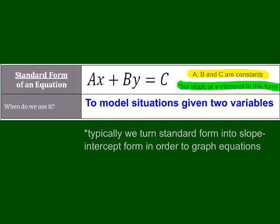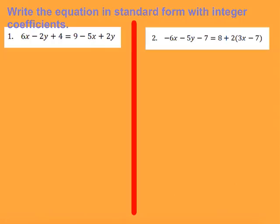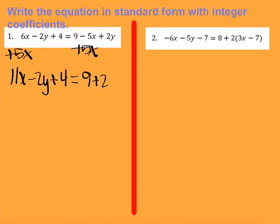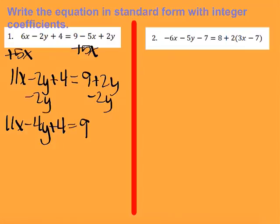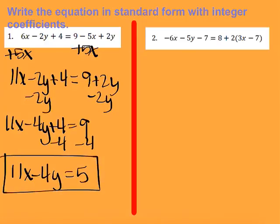When we need to graph it, we turn it into slope-intercept form. So let's take a look at an example of putting it into standard form. I need to get my X's and Y's on the same side, so I'm going to start by adding 5X to both sides. I get 11X minus 2Y plus 4 equals 9 plus 2Y. Then I subtract 2Y from both sides and get 11X minus 4Y plus 4 equals 9. To completely get it into standard form, the constant needs to go to the other side. So I subtract 4 from both sides and get 11X minus 4Y equals 5. That's my final answer for number 1.